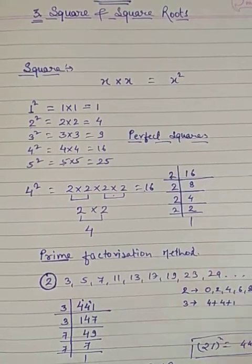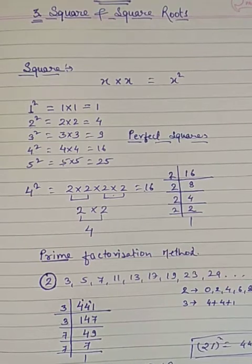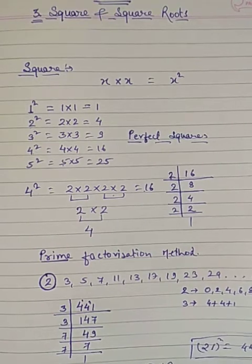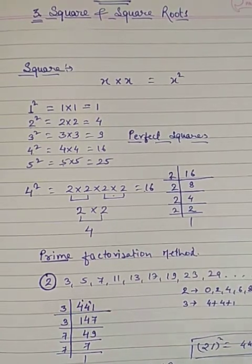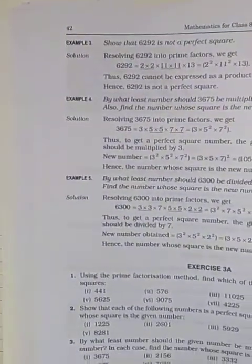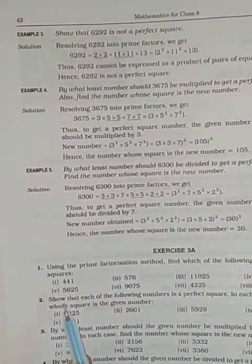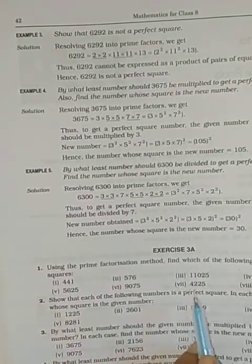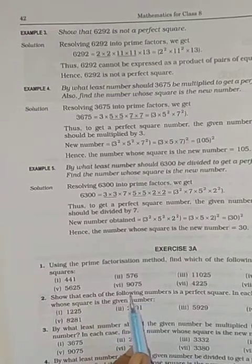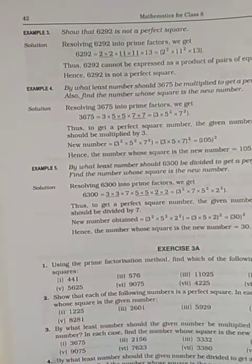I hope you understand this question. Now we move to Exercise 3a, Question Number 2. Here we have to see which numbers are perfect squares and which are not.